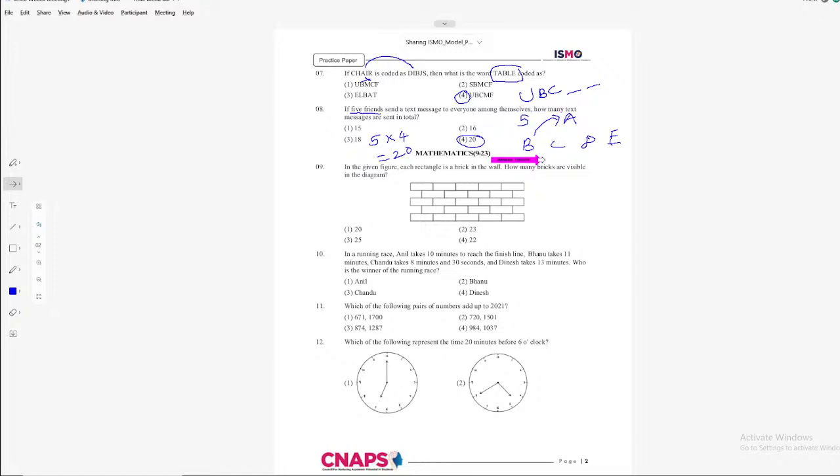I hope you understand because there are 5 friends. A sends message to the other 4 persons. B sends message to the other 4 persons. A, C, D, E. Likewise, 5 people send 4 messages to other 4 friends. That's why 5 fours are 20 which is option 4. Let's move on.